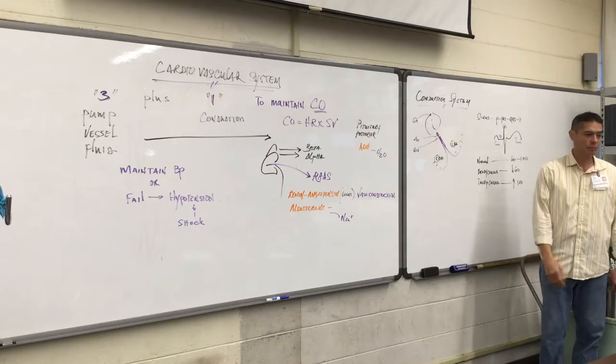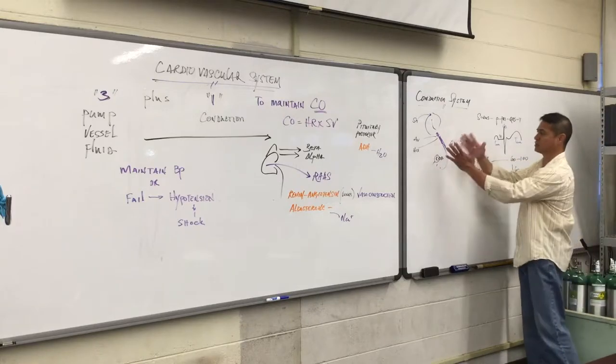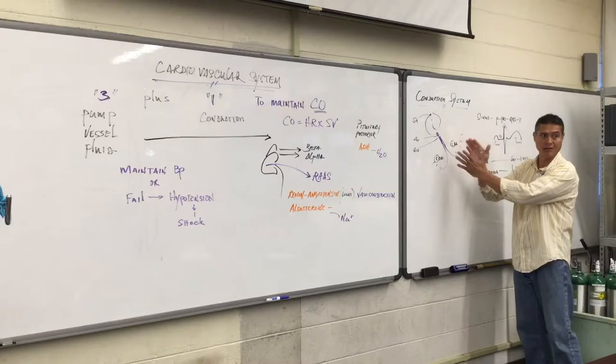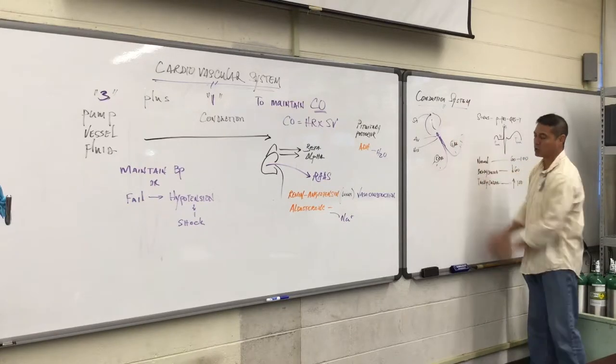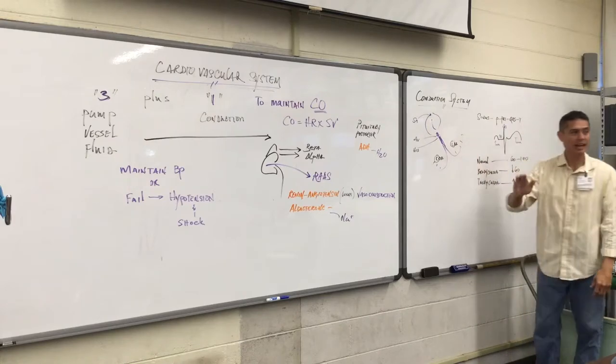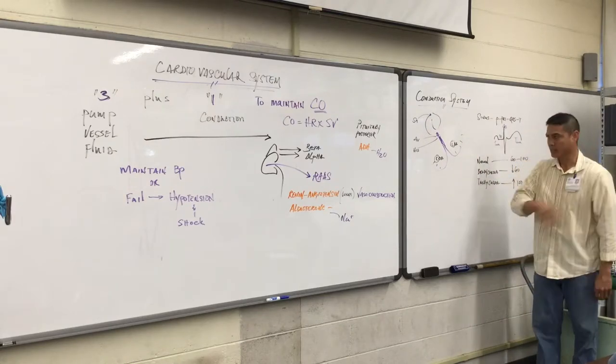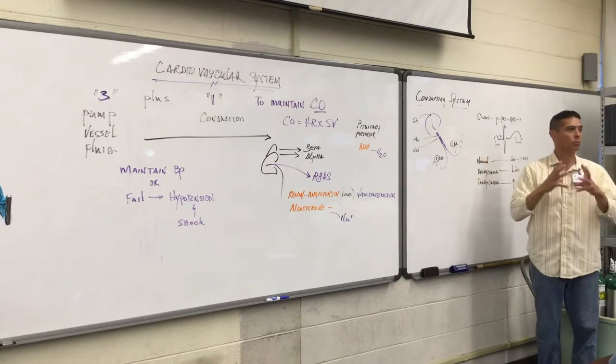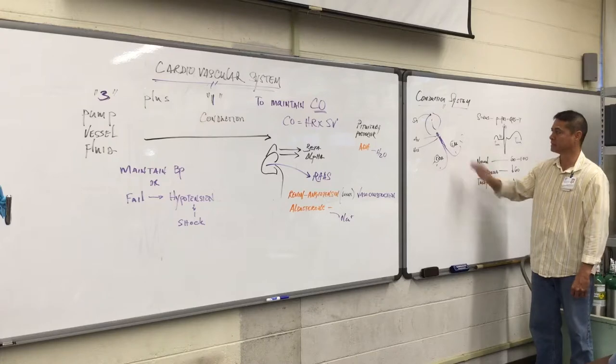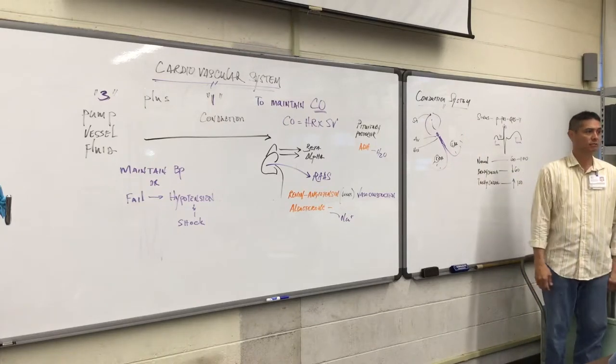Once that impulse then passes through the AV node, it goes into the junction where all of these ventricular wires sort of bundle together. That's why they call this the bundle of His. The electrical impulse continues down through the right and left bundle branches. The left side having two bundle branches and the right having only one, as this is the larger, more muscular part of your cardiovascular system. As that impulse goes down those bundle branches, then they enter into the Purkinje system.